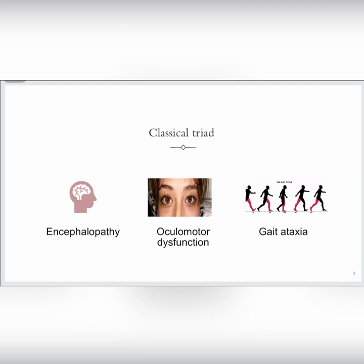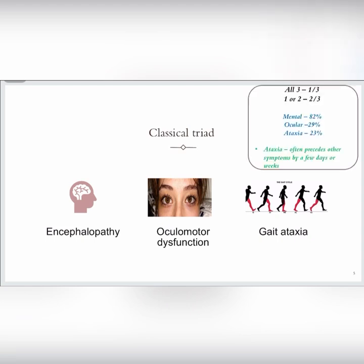Here is the classical triad for Wernicke encephalopathy, which contains encephalopathy, oculomotor dysfunction, and gait ataxia. However, it is less common to find all these three signs together in patients. In only one-third of patients will we be able to find all these three signs together. In two-thirds of patients, we will find one or two signs. It is also possible that no signs from the classical triad may be found, so we should consider the patient's history.